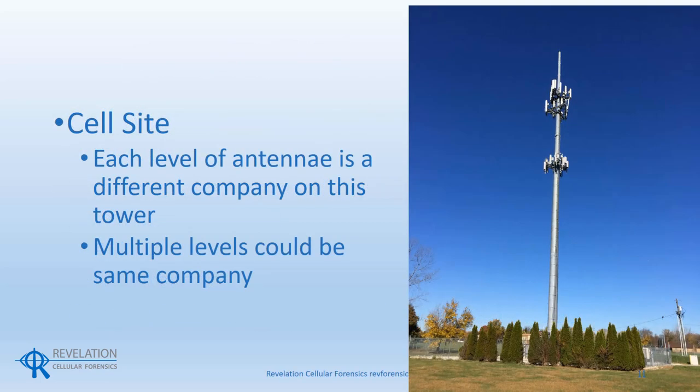Cell sites arrange in many different configurations, but the most common is in the form of a tower. Some carriers place cell sites on existing structures such as buildings, water towers, or electrical towers. Some cell sites are designed to look like trees or flagpoles. The cell site in the photo here is a monopole design, and each level of antennas is a different carrier. A third party owns the cell site, and the cell site owner rents the space on the tower to the carriers. There are three levels on this tower, and each is for a different carrier.